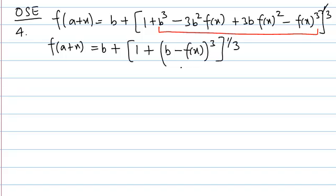If you have done it then half of the question is already done. Identifying this is a perfect cube. Now after that we can write this as f of a plus x minus b equals to 1 plus b minus f(x) cube